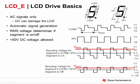LCDs must be driven with AC signals. A DC level on an LCD segment will damage the LCD. The MSP430 LCD module generates the alternating current waveforms automatically. The RMS voltage presented to an LCD segment determines whether it is on or off. The example waveforms here show resulting waveforms of both an on and off segment. The on segment has a much larger RMS voltage than the off segment. Note that both segments have waveforms with net zero DC voltage, but the RMS voltage on the on segment is higher, causing the segment to turn on.